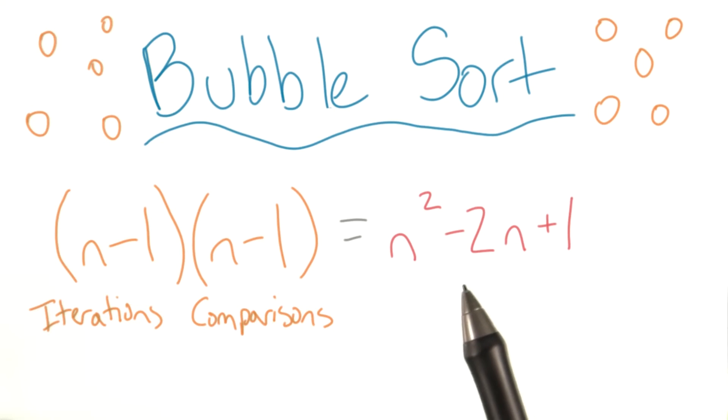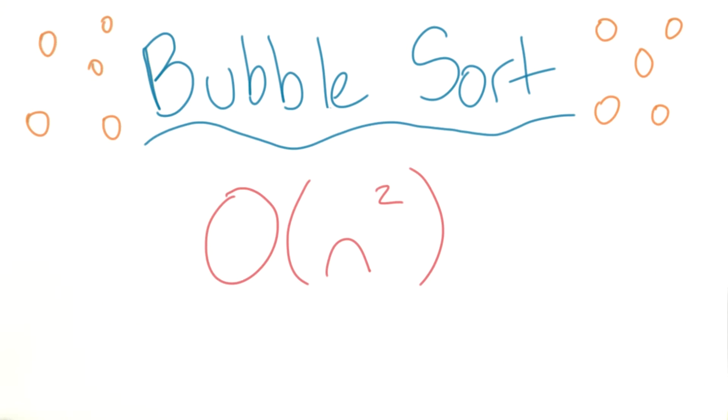Thus, we really don't need this minus 2n plus 1 bit. We can get rid of it, and that leaves us with the efficiency: Big O of n squared.